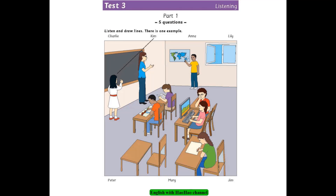Who is the boy who's sitting at his desk? Which one? The one who's drawing a picture? Yes, that one. He's got short hair. That's Jim. He's good at drawing. Now listen to Part 1 again.